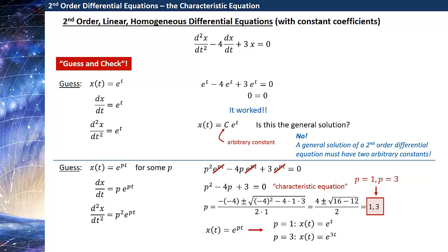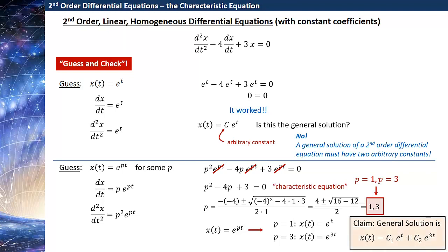Making that generic guess e to the pt allowed me to figure out what those two values were without having to go through all possible numbers in the exponent. So x of t equal to e to the t is a solution, as I found earlier, and x of t equal to e to the 3t is also a solution. I can put an arbitrary constant in front of each of these, and my claim — which you can check — is that the general solution is x of t equal to c1·e to the t plus c2·e to the 3t. You can check this by plugging it into the differential equation: it solves the equation and has two arbitrary constants, so it must be a general solution.